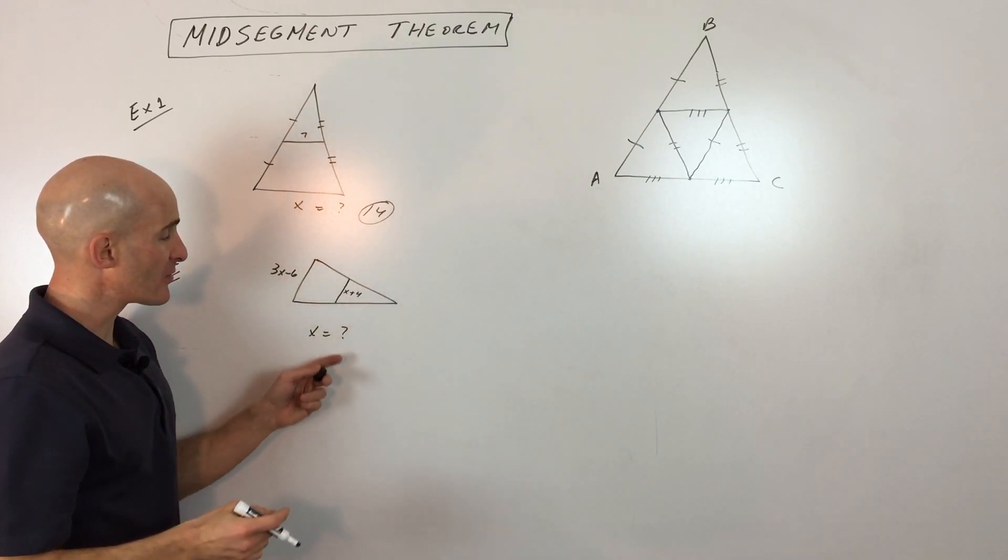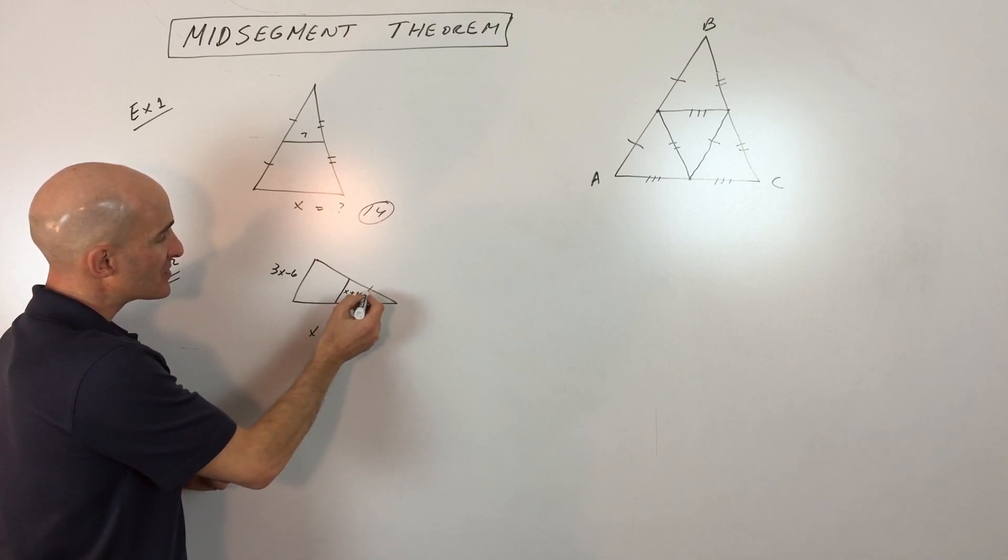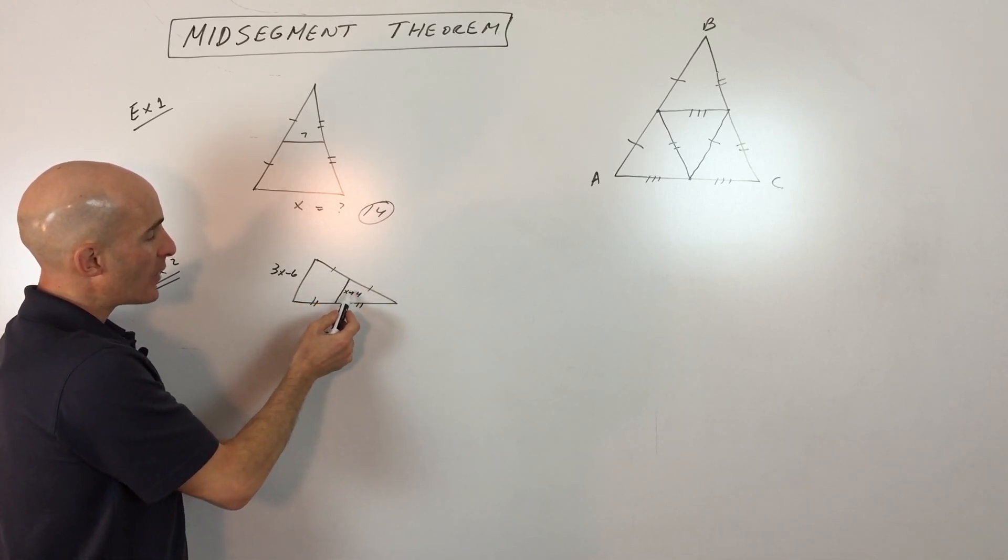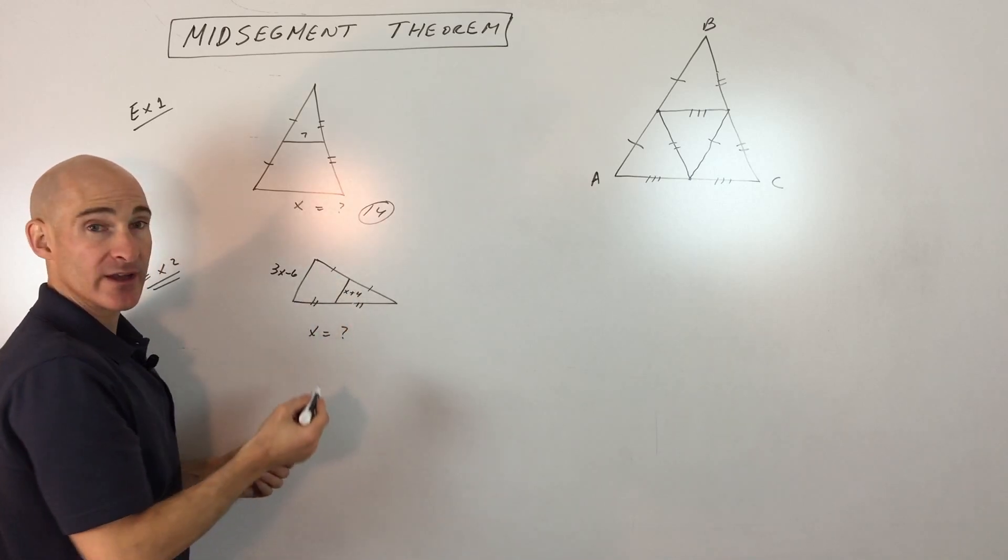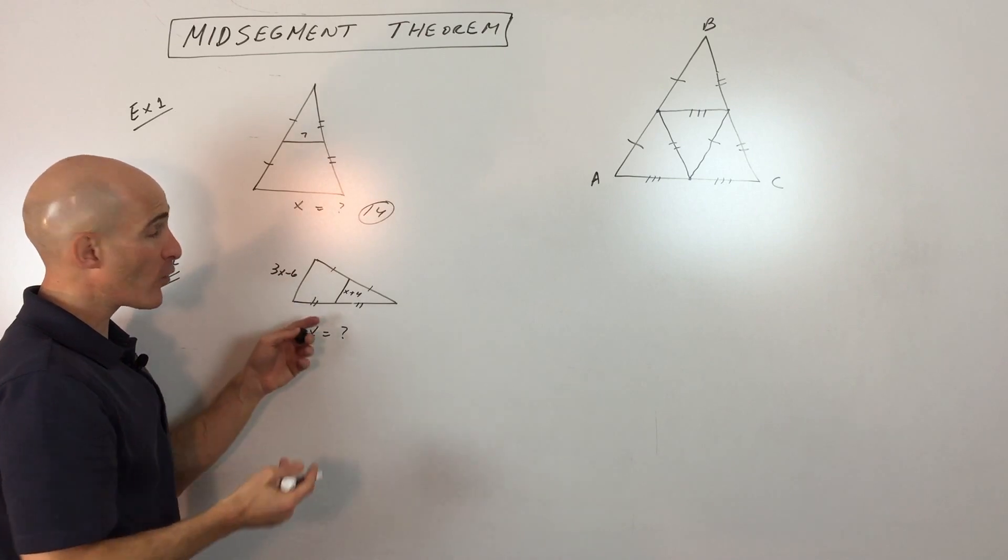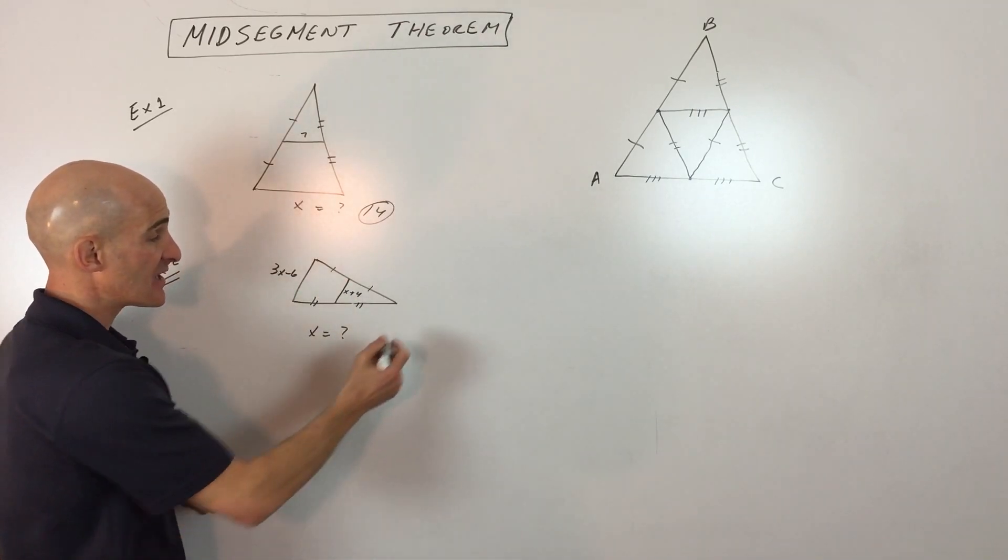Example number 2, a little bit different. We're combining algebra with geometry here. Here they're giving us this midsegment. So let's make sure that we have that identified as the two midpoints. So how do we relate this quantity and this quantity? Well, we know that the midsegment is half the base. So if we want to make an equation, an easy way to do this is to double the midsegment and then set it equal to the base.